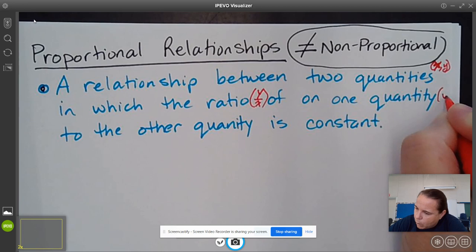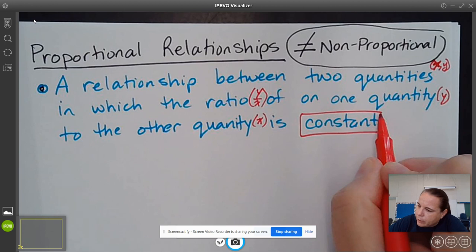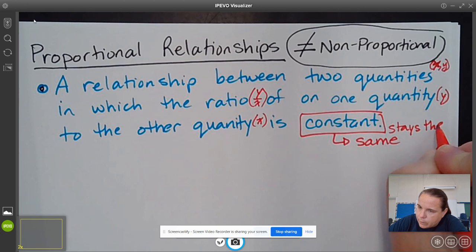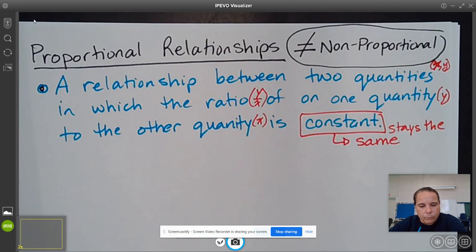But the relationship of one quantity, Y, to the other quantity, X, is constant. And constant means it is the same or it stays the same. So this is what we're going to be looking for.